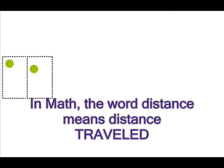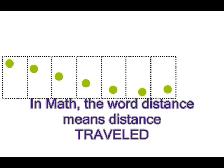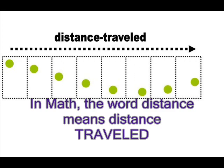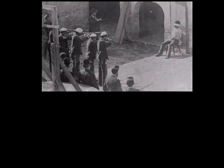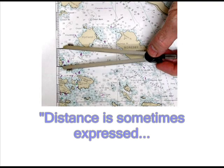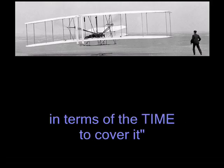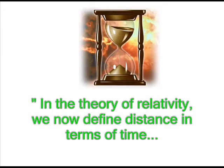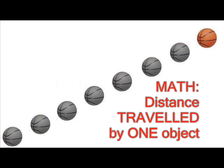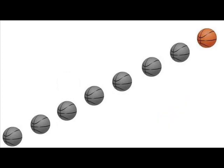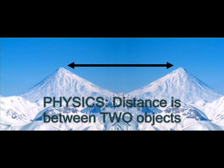When the mathematicians use the word distance, they are alluding to a movie of the distance traveled by a ball. Sometimes the mathematicians measure distance traveled by laying tiles; more often, they measure distance traveled by counting seconds. Distance is sometimes expressed in terms of time to cover it. In the theory of relativity, we now define distance in terms of time and the speed of light. So clearly, the dynamic distance traveled by one object has nothing to do with the static distance between two objects.